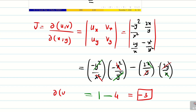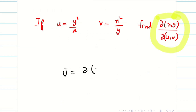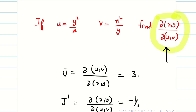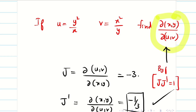We found J = ∂(u,v)/∂(x,y) = −3. But the question asks for ∂(x,y)/∂(u,v), which is the opposite. So we define J' = ∂(x,y)/∂(u,v). Using the property that J · J' = 1, we simply take the reciprocal. Therefore ∂(x,y)/∂(u,v) = −1/3.